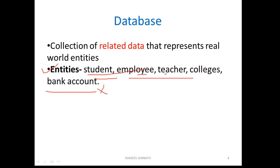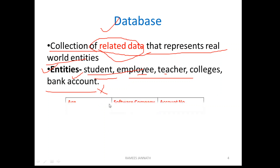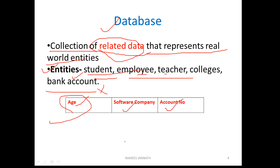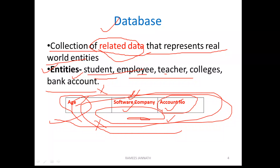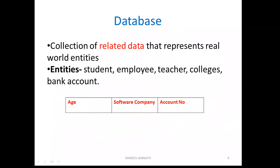Student, employee, teacher have physical existence. So a collection of related data that represents real world entities is called a database. We always store related data in a database. For example, unrelated data like age, software company, and account number from Infosys would be completely unrelated — you store only related data in a database.